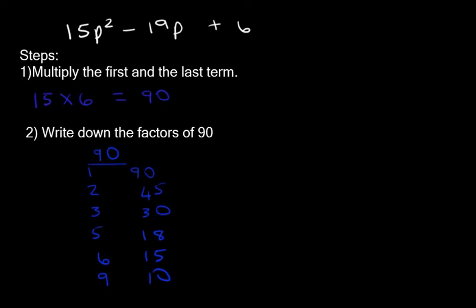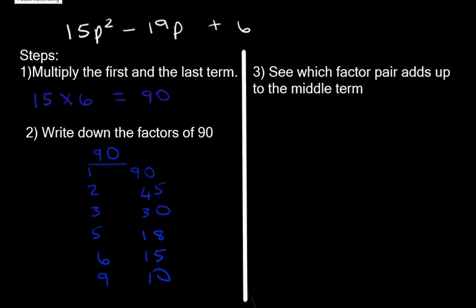The last term is positive. And if the last term is positive, both brackets will have a negative sign in them. The third step is to see which of these factor pairs add up to the middle term. So which pair adds up to negative 19? If you said 9 and 10, that would be correct.